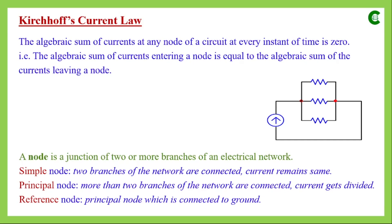This is a simple network with one current source and three resistors. The current source has a value I, which gets divided into three parts — I1, I2, and I3 — each flowing through one resistor.